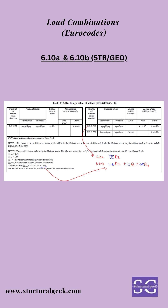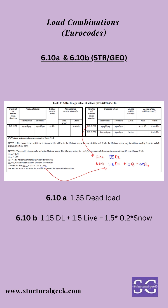The next combinations are 610a and 610b, used for strength design of foundations and members. 610a is given as 1.35 times dead load, while 610b is given as 1.15 times dead load — all permanent actions — plus 1.5 times the leading variable actions, plus 1.5 times the psi factors of other variable actions. For 610a, the gamma G superior of 1.35 is used; for 610b, gamma G superior times the epsilon factor of 0.85 gives 1.15. A typical example of 610b is 1.15 times dead load plus 1.5 times live load plus 1.5 times 0.2 times snow load.